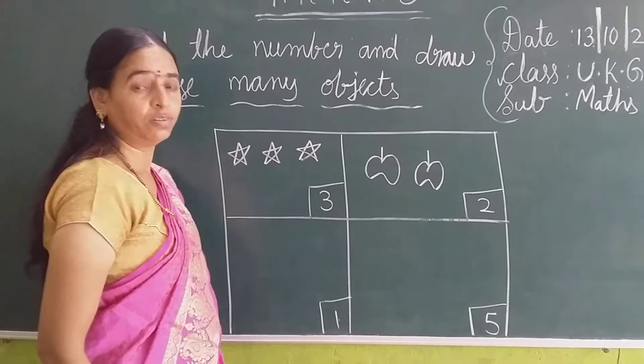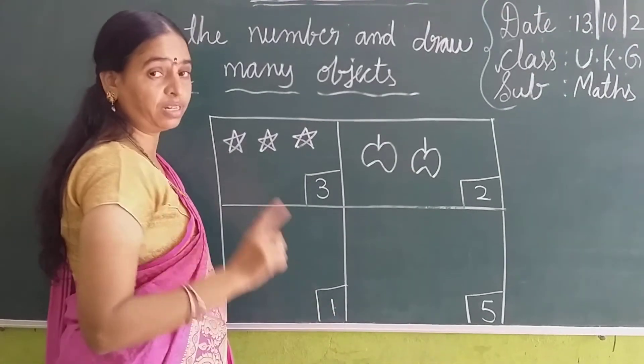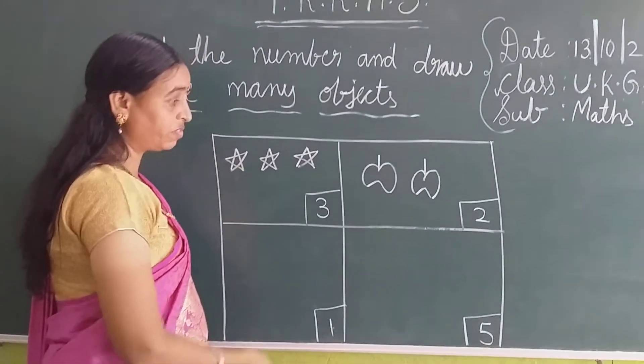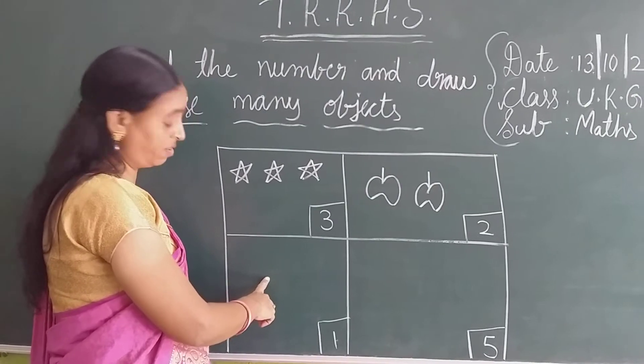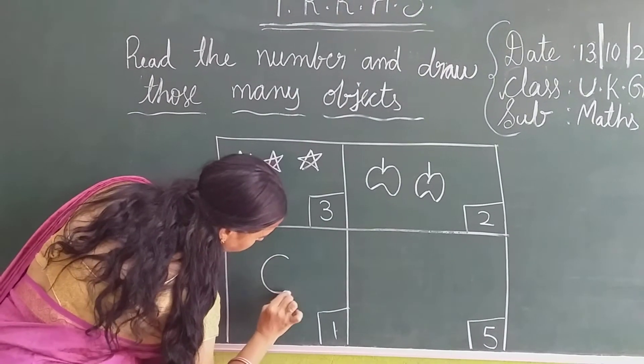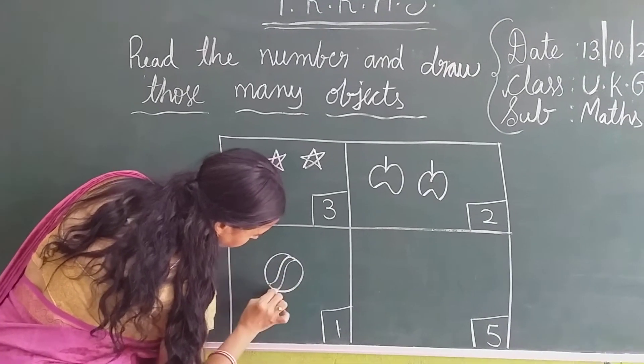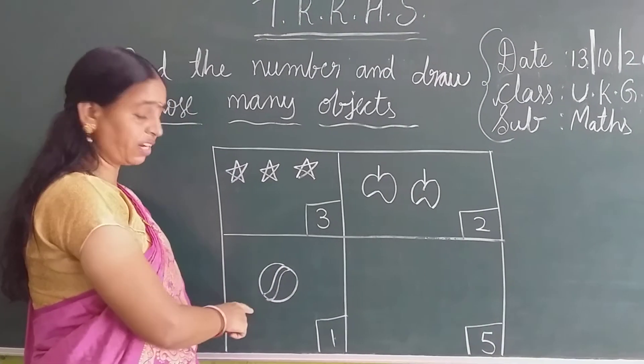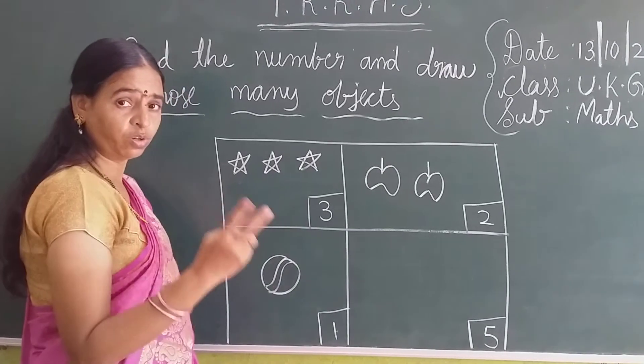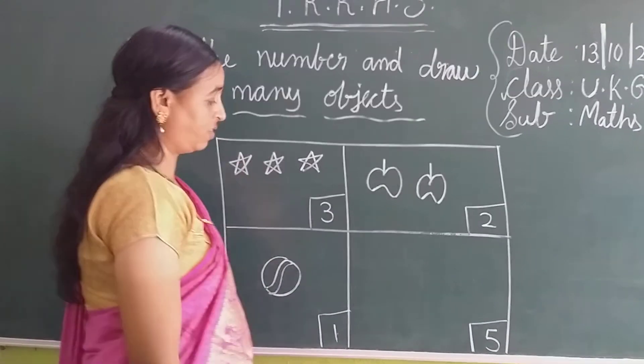1. What is this? Number 1. So what we are going to draw? We are going to draw a ball. Yes. How many we have to draw? Only 1 or 2? 1. Now next.